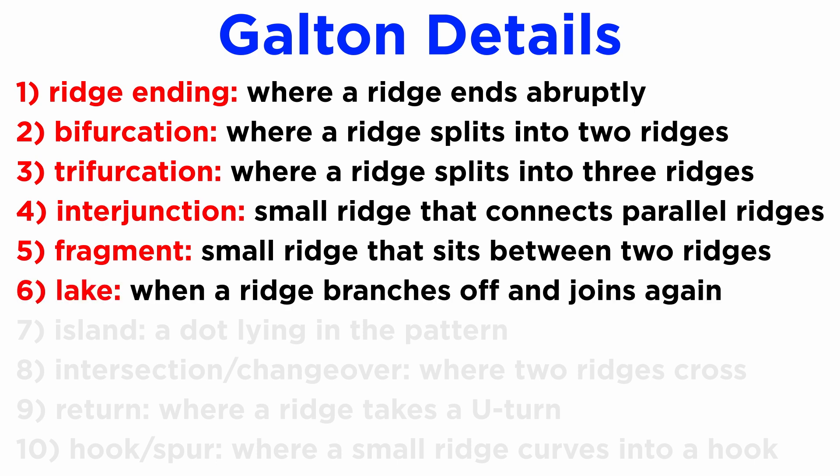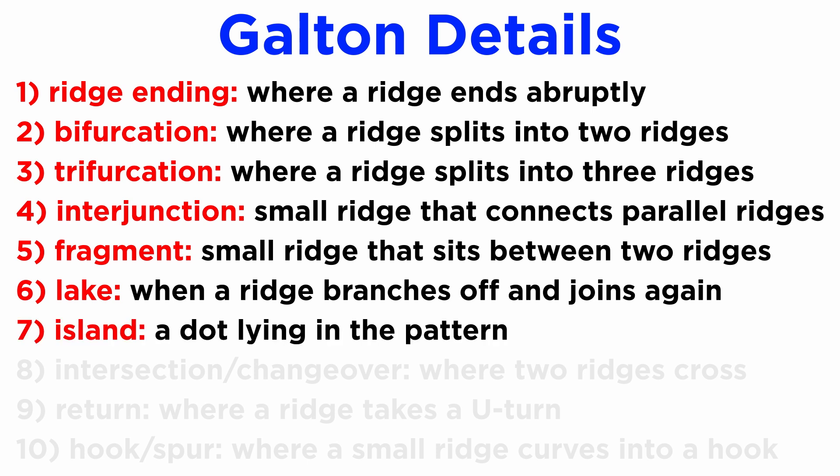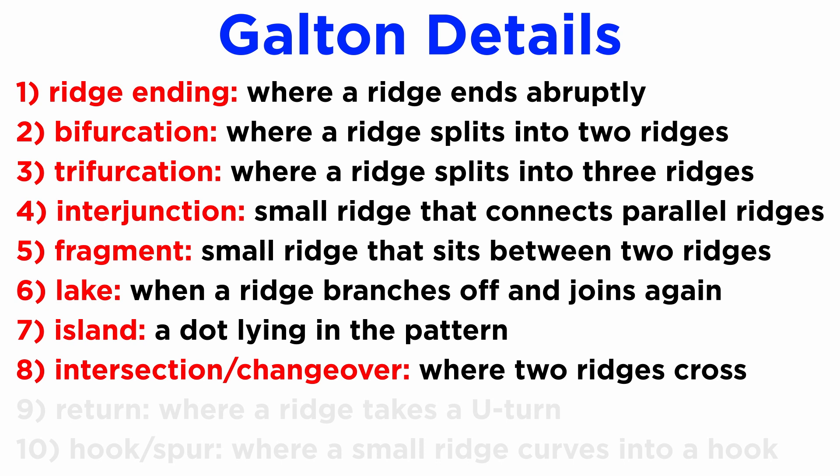6. Lake — this detail is formed when a ridge branches off and joins the parent ridge again, forming an enclosure of elliptical shape. 7. Island — this is just a dot lying in the fingerprint pattern. An island and a fragment should not be confused because the latter looks more like a short ridge. 8. Intersection — also known as changeover, this detail is observed where two ridges cross each other's paths and travel independently without ending.